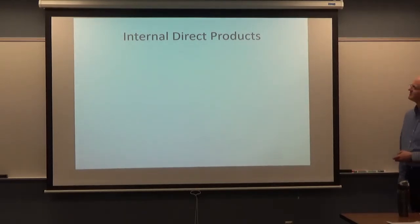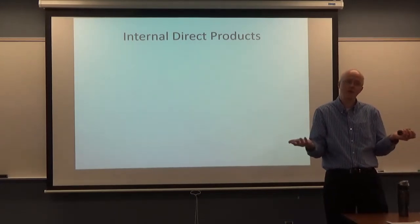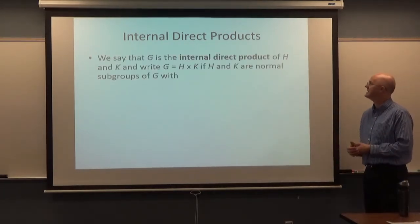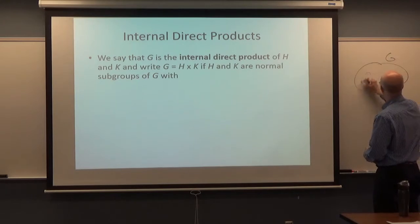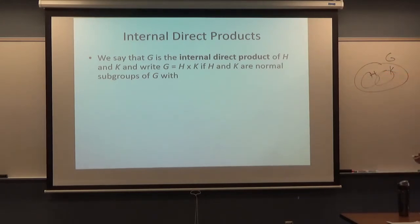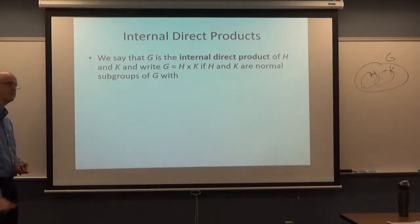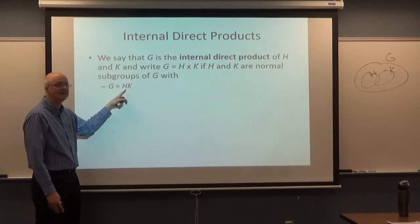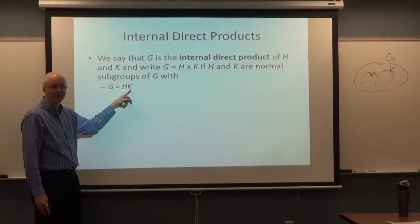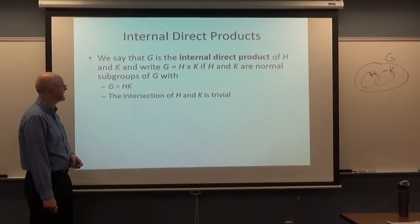Internal direct products. You've got external direct products and internal direct products — there is a difference between them, but they are related. We say that a group G is an internal direct product of subgroups H and K — where H and K are subgroups internal to G — and we write G = H × K, if: first, H and K are normal; second, G = HK, meaning every element of G is the product of something in H times something in K; and third, the intersection of H and K is trivial, just the identity.